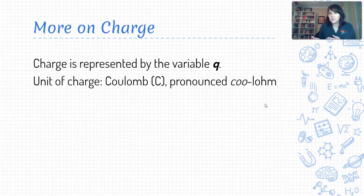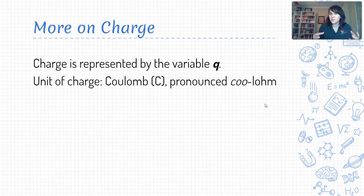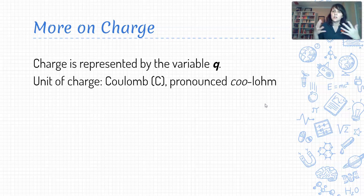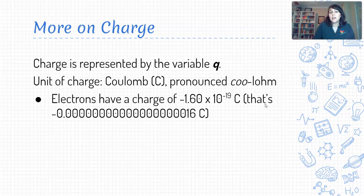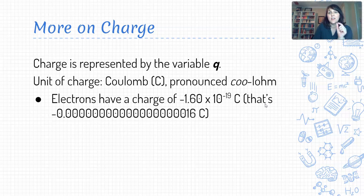If you took chemistry previously, or maybe this shows up in biology as well, you may have measured charge in terms of number of protons or number of electrons. But now that we're dealing with things at a slightly larger scale — many, many electrons or many, many protons — it's helpful for us to have a different unit of measurement: the Coulomb. Just to place that in perspective, a single electron has a charge of negative 1.6 times 10 to the negative 19 Coulombs, which without scientific notation would be a decimal point, 18 zeros, and then a 1.6. So each electron has a teeny, teeny, teeny fraction of a Coulomb.